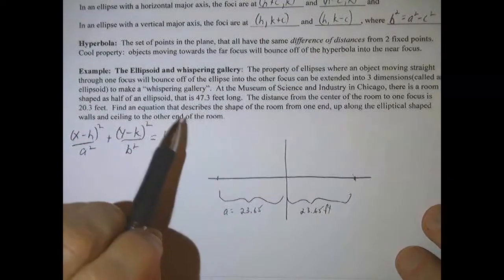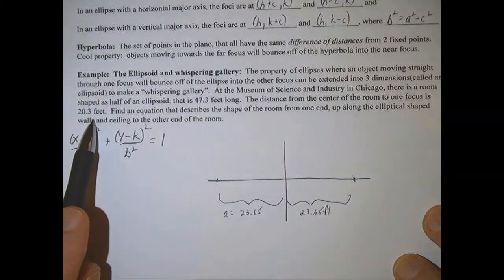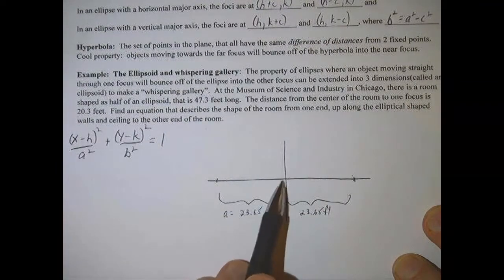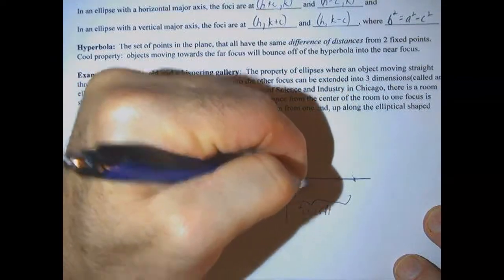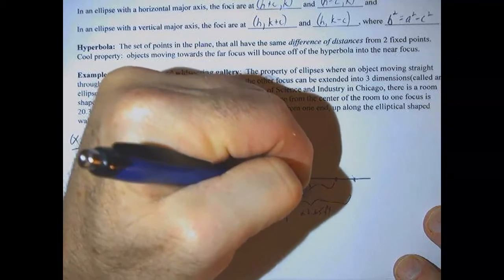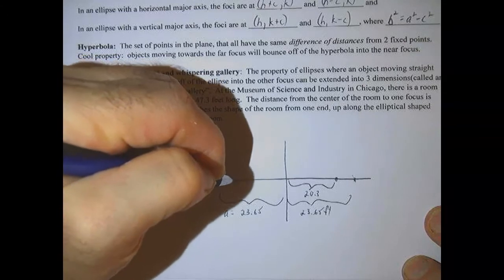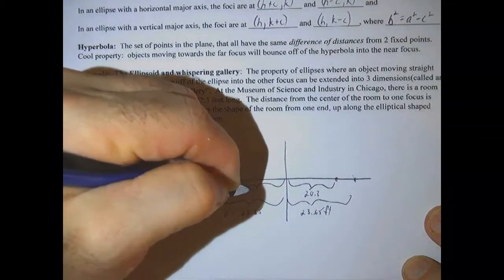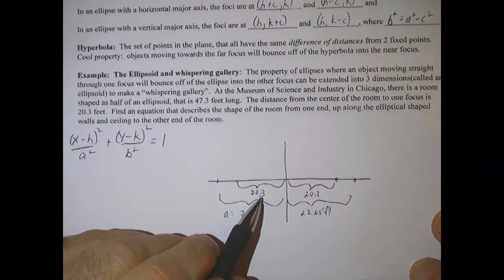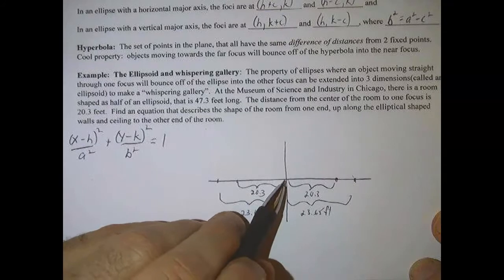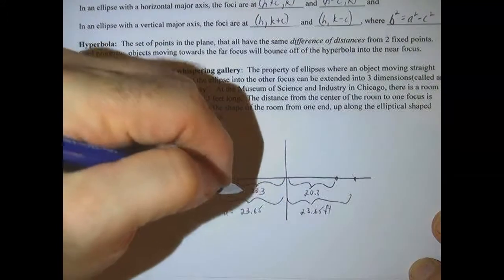We're also told where the foci are. So there's one focus at 20.3 feet from the center of the room. There's the center of the room, and there's a focus here at 20.3 feet. That's actually going to be the distance from the center to the focus, that's the c.